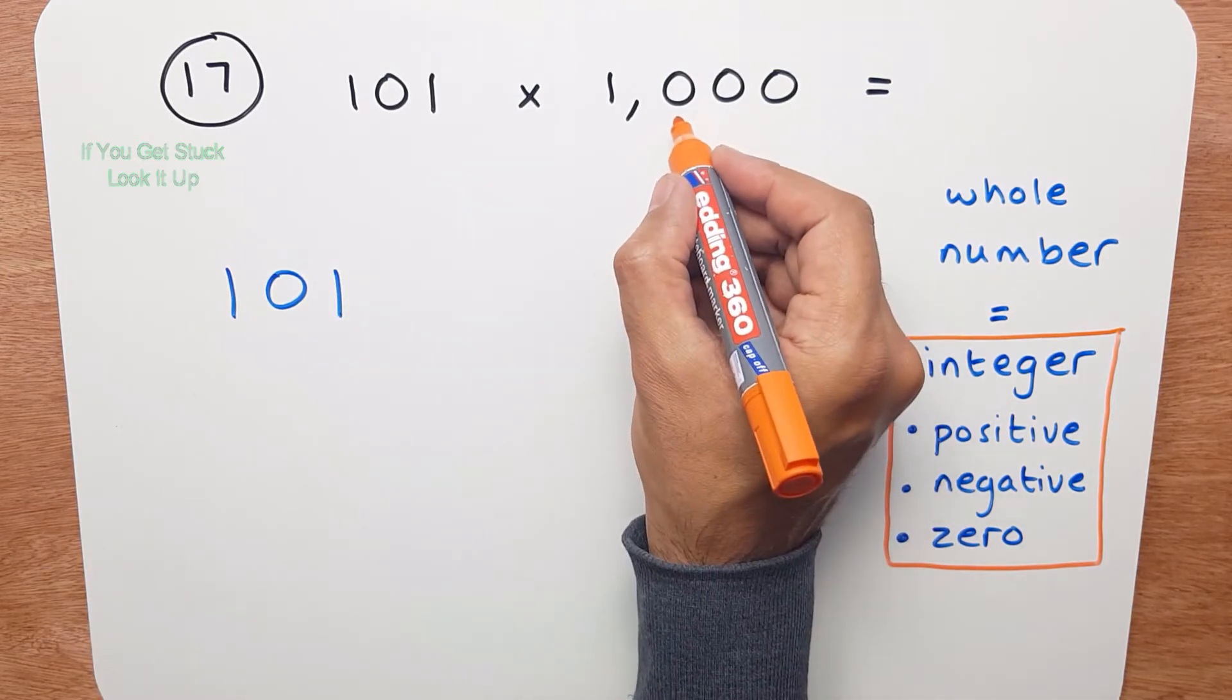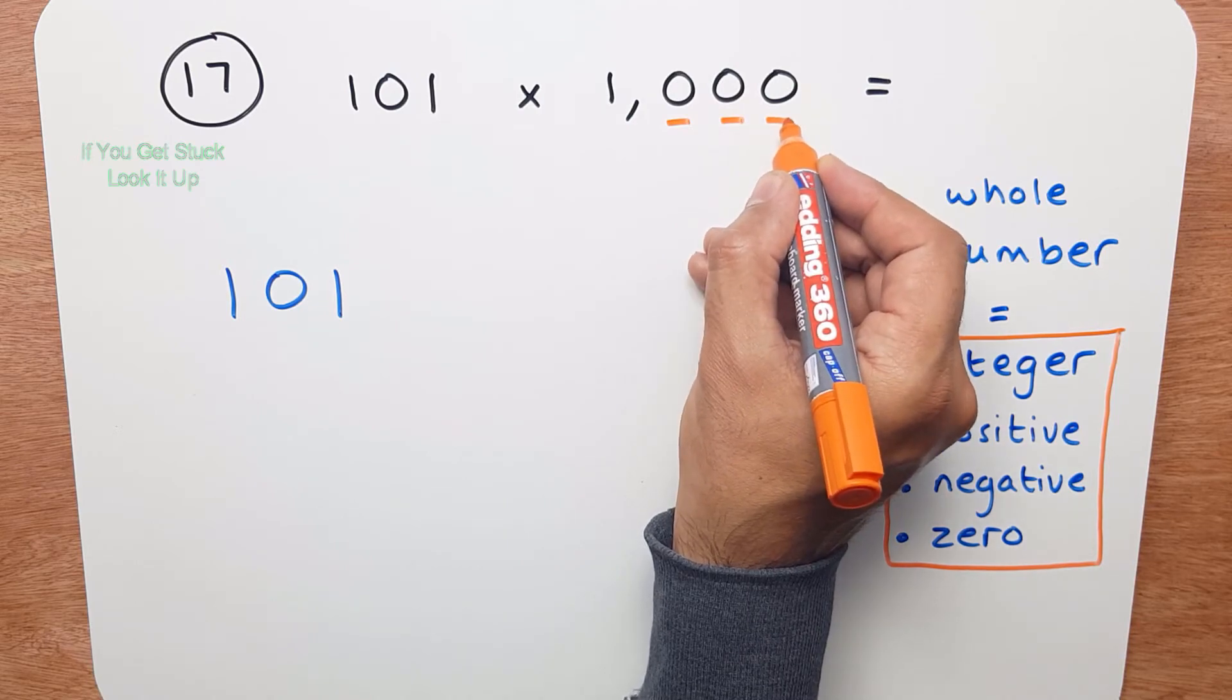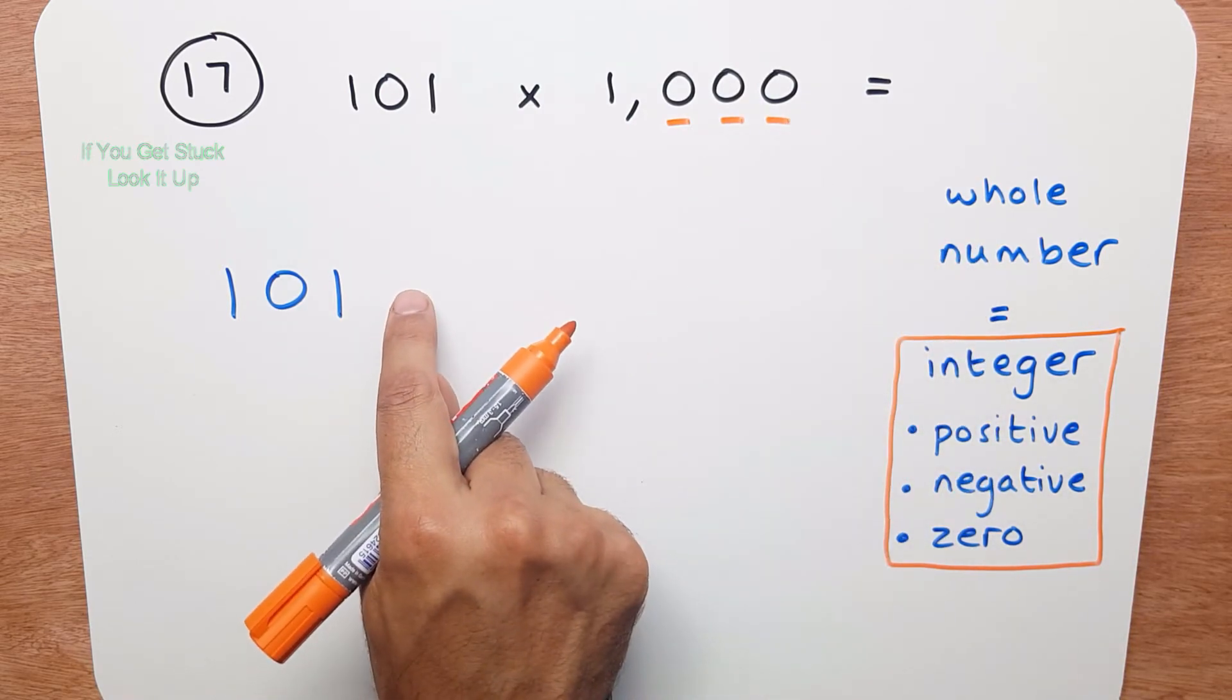And you count how many zeros there are: 1, 2, 3. And you add three zeros to the end.